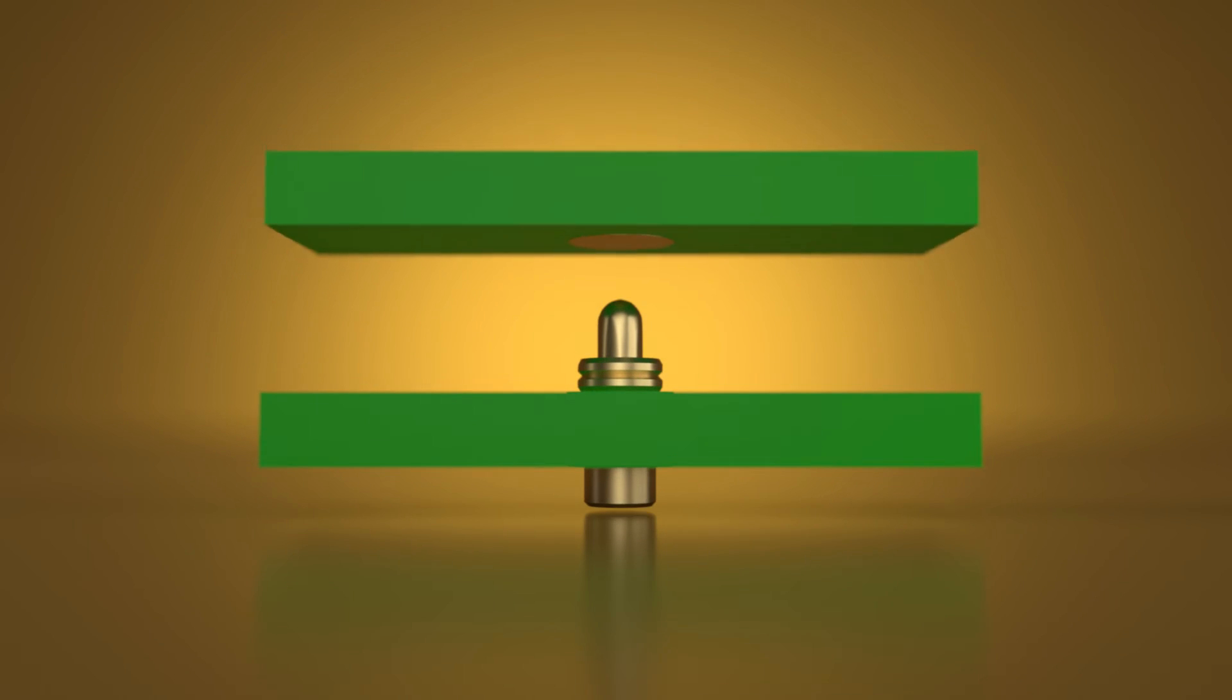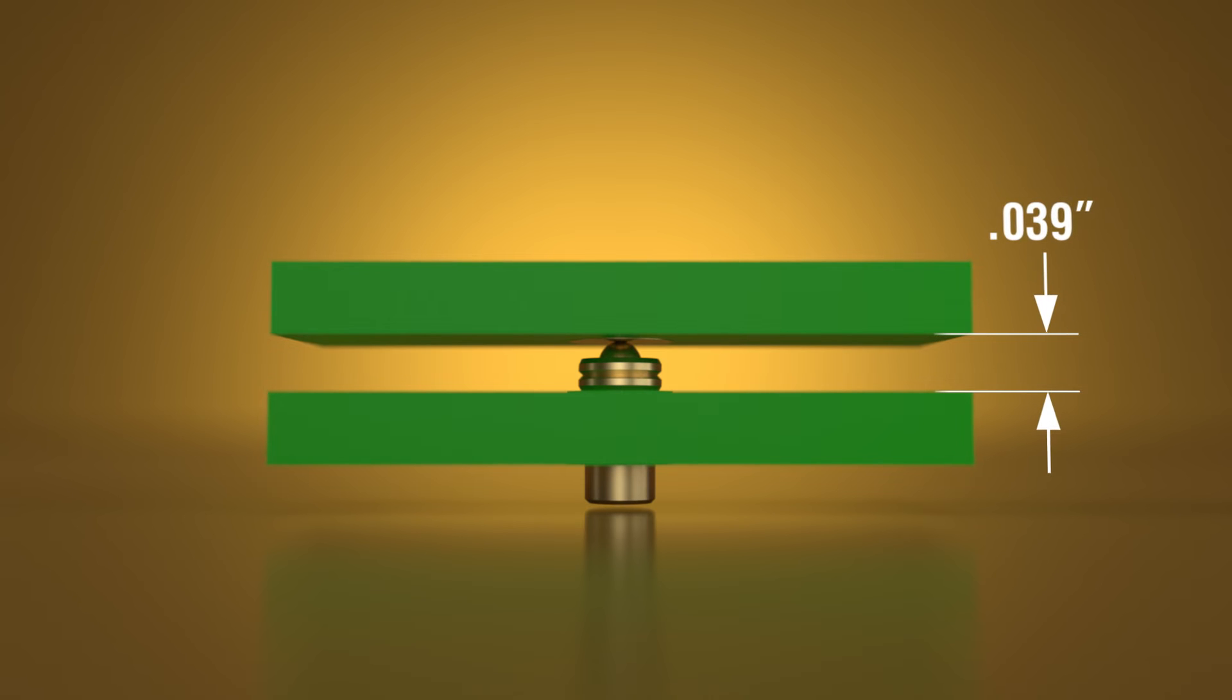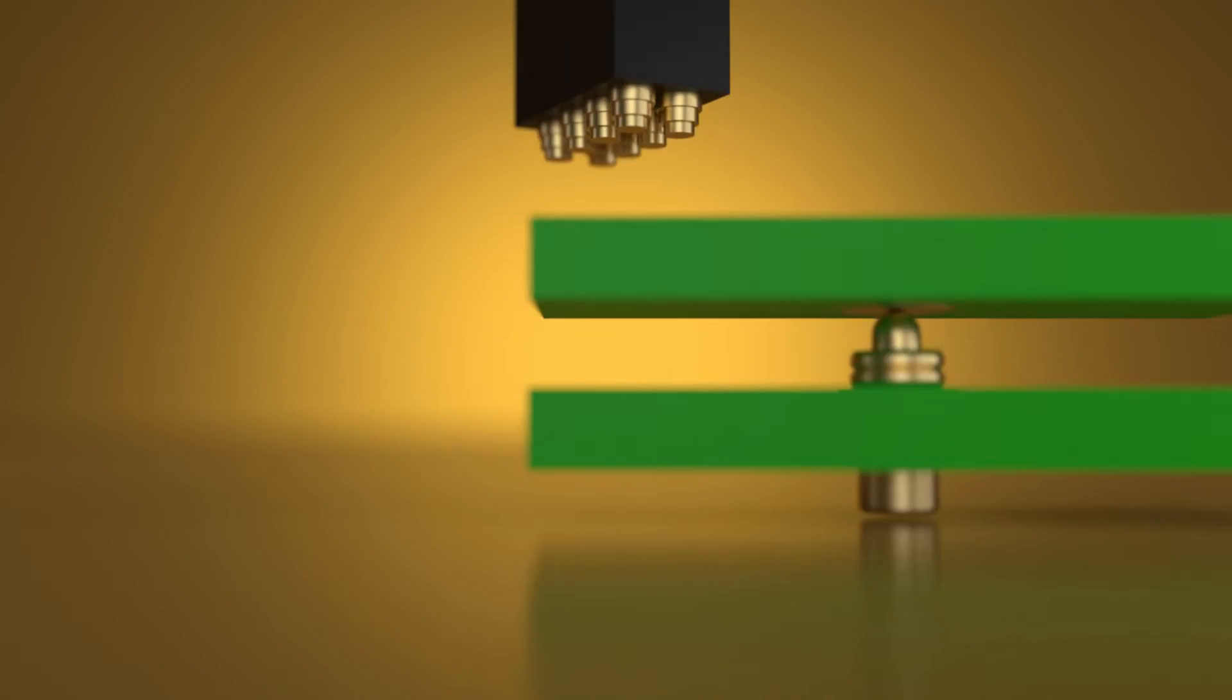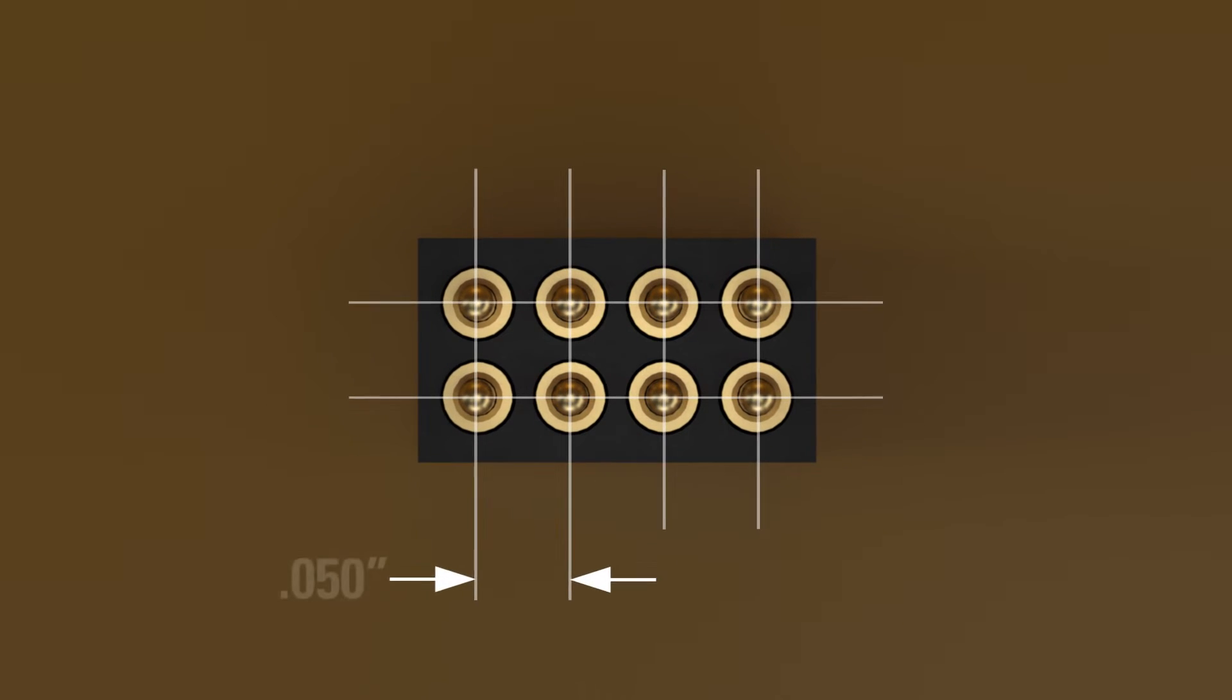Number six: With Milmax spring-loaded pins, you can reduce between-board spacing to just thirty-nine thousandths of an inch. Pin-to-pin spacing can be as fine as fifty thousandths of an inch.